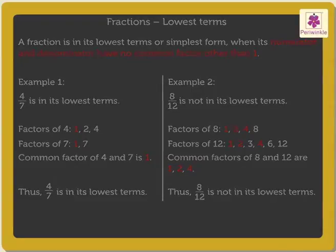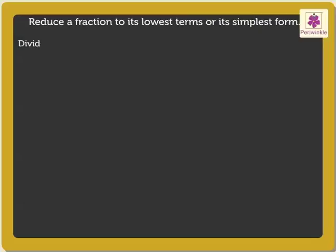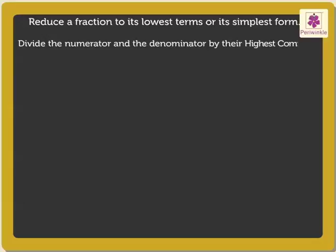Kids, now let us see how to reduce a fraction to its lowest terms or its simplest form. To do this, we divide the numerator and denominator by their highest common factor. Let us understand it in a better way by solving a few examples.